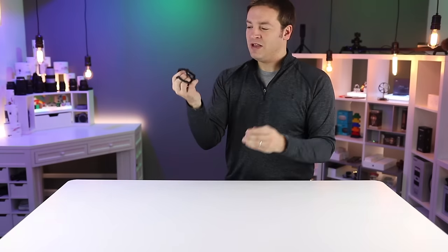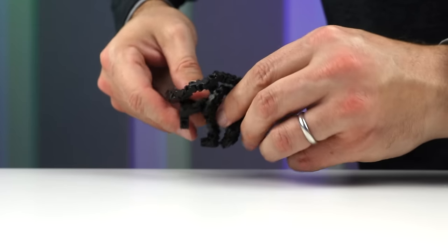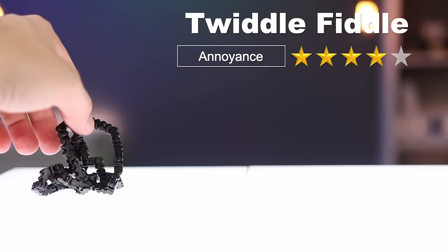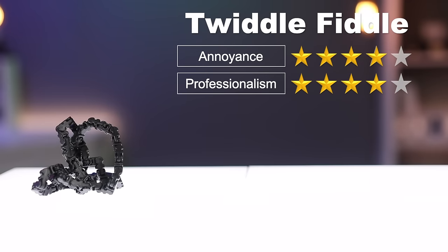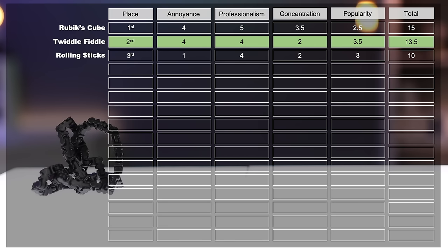Next up is the Twiddle Fiddle and it is a favorite by many as well. You can just wrap it around your fingers like a rubber band or you can make shapes with it. It gets a four for annoyance, four for professionalism, two stars for concentration and three and a half for popularity, making it take over second place.